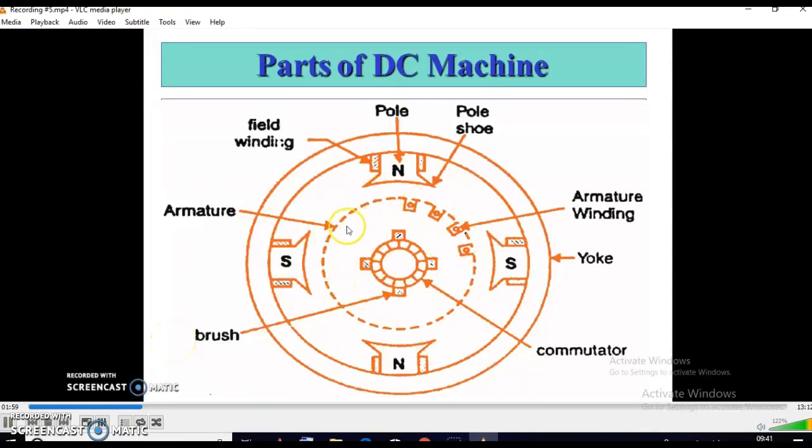Now, this is the armature, the rotating part of the DC machine. It consists of coils of insulated wires wound around an iron core, in such a manner that electric currents are induced in these wires when the armature is rotated in the magnetic field.